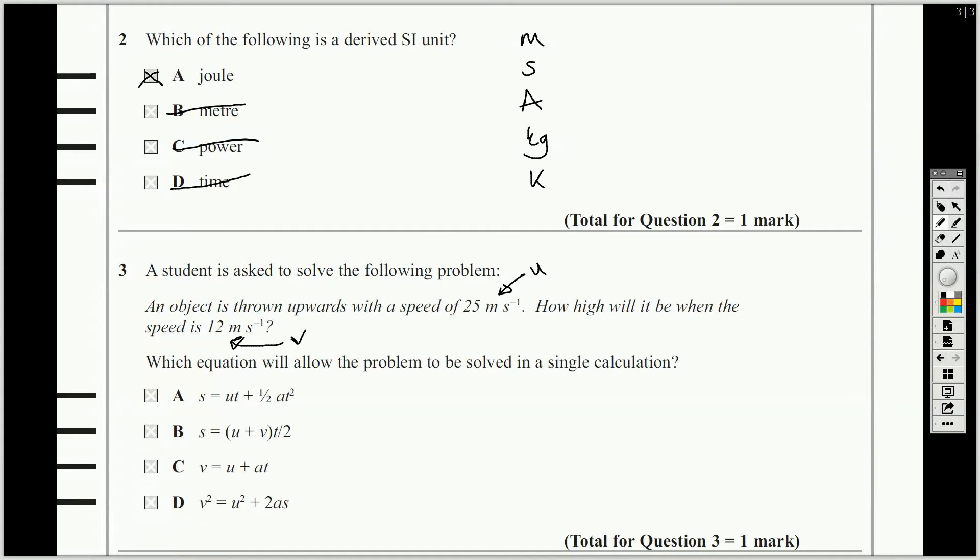How high will it be when the speed is 12 metres per second? We've got U, we've got V, which ones have got U and V in them first of all? All of them apart from this one, so we're not interested in that one. So, you're asking to work out how high will it be. So, you're asking to work out S and it's one of these questions where you need to remember you've got a little bit of extra information that you know, which is G, 9.81.